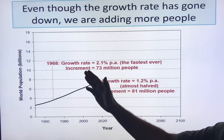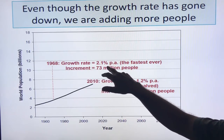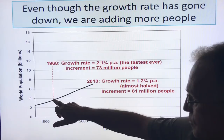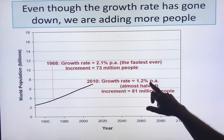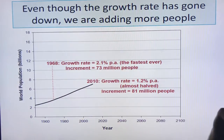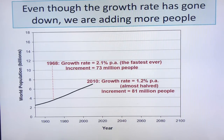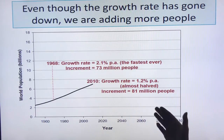The growth rate on a per annum basis has dropped — it's almost half the peak. The peak was in 1968 at 2.1% per annum, which was 73 million people per year because it was based on less than 4 billion people. In 2010, the growth rate was 1.2% per annum, almost half, but the number of people is now 7 billion, so that's about 81 million people — more than 73. So even though the growth rate is declining, the total population has grown so fast that the yearly increment is still high and still growing.